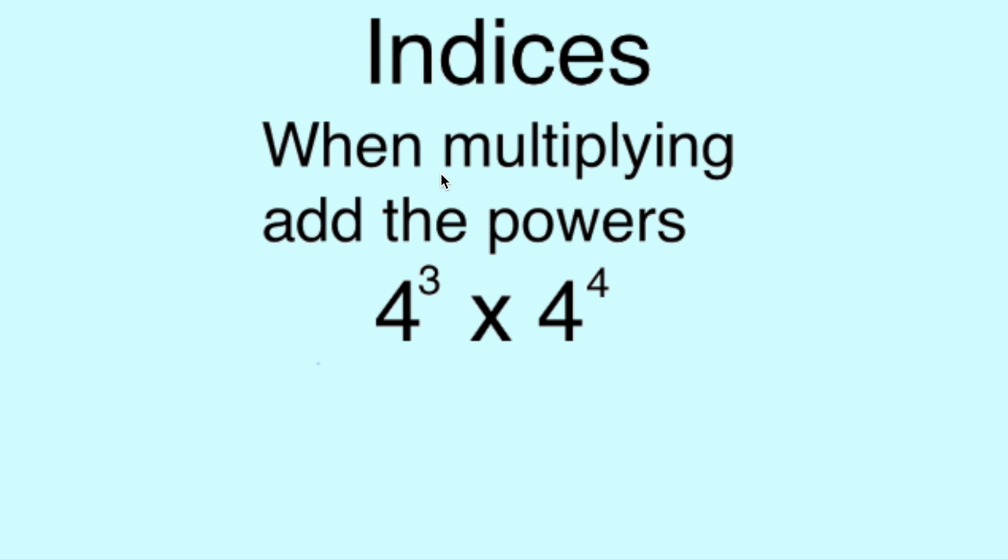And the first rule of indices to remember is when multiplying, we add up the powers. So 4 to the power of 3 times by 4 to the power of 4, we simply add the 3 and the 4 together, which gives us 7. So the answer would be 4 to the power of 7.